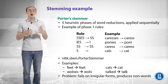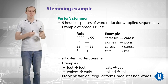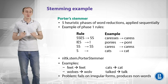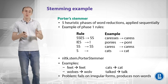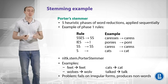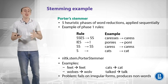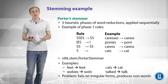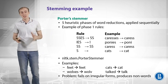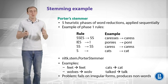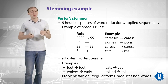Looking at examples of Porter's stemmer: 'feet' produces 'feet' — it doesn't handle irregular forms. 'Wolves' produces 'wolv' — not a valid word but still useful for analysis. 'Cats' becomes 'cat' and 'talk' becomes 'talk'. The problems are obvious: it fails on irregular forms and produces non-words. But that may not be much of a problem in practice.